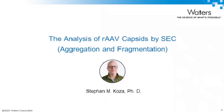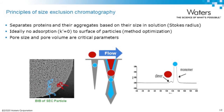I'll start with work on the analysis of AAV capsids by size exclusion chromatography, looking at aggregation and fragmentation. SEC separates proteins not based on molecular weight but based on their size in solution. The separation can be visualized by considering the cross-section of an SEC particle: as particle size increases, it cannot enter smaller core volumes, and even in larger core volumes, a larger particle can't explore as much available pore space and is excluded from constrictions within the particle structure.